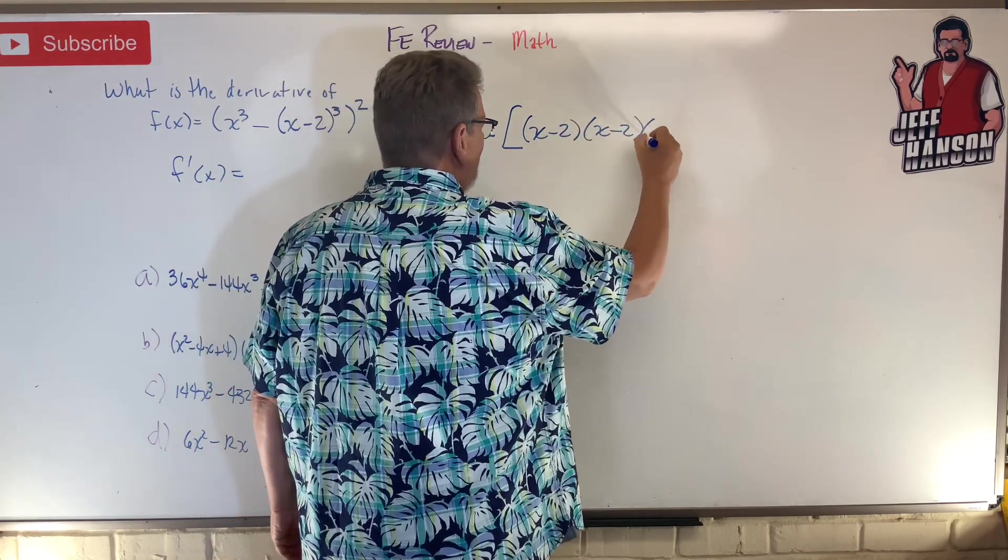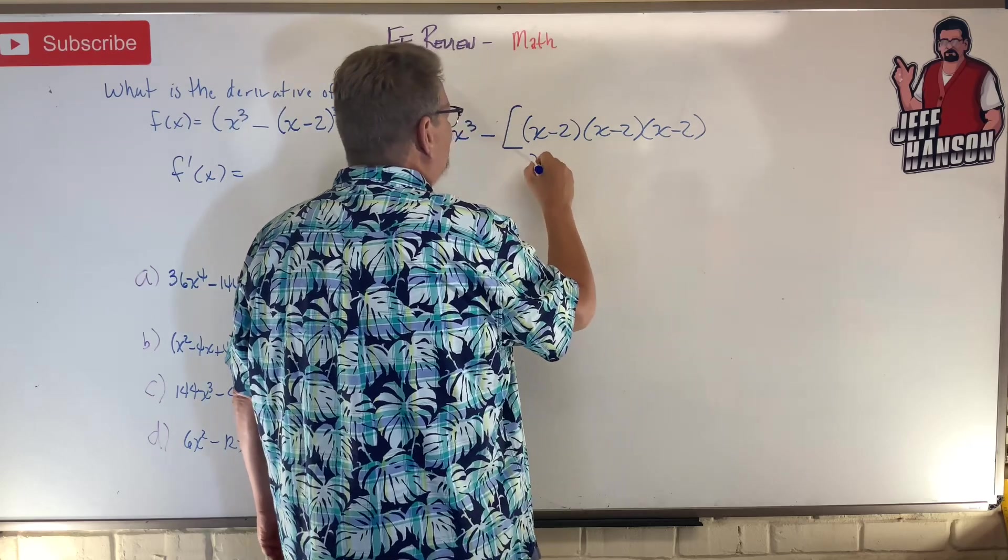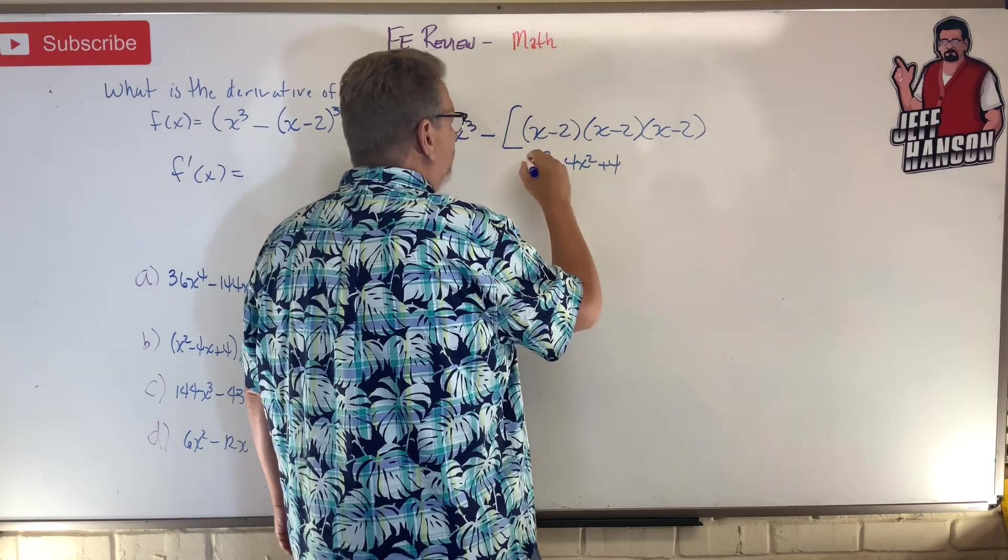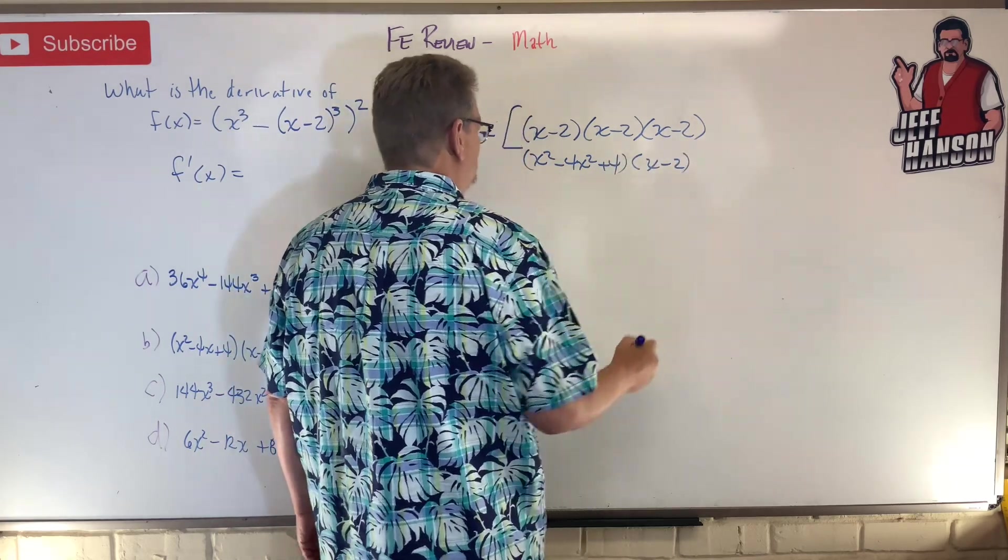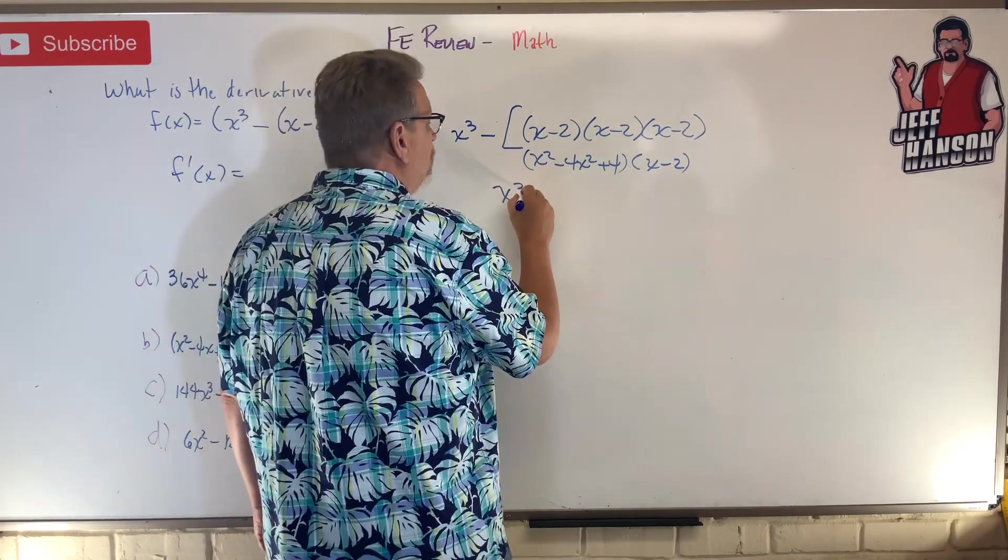Two of these is x² minus 4x + 4. That's times another (x-2). So let's multiply that out and I get x³ minus 2x², plus 4x.